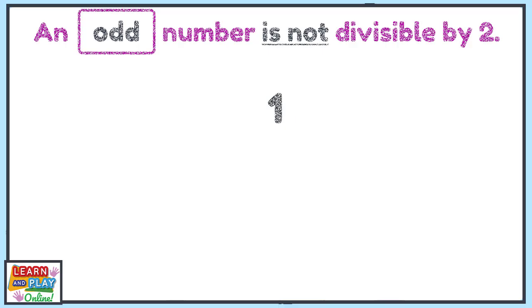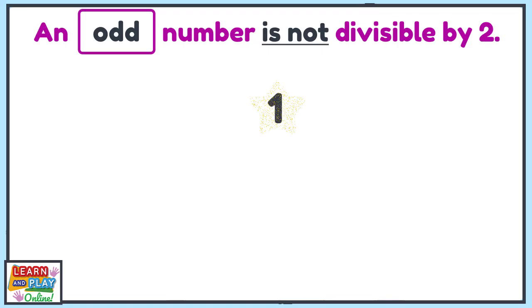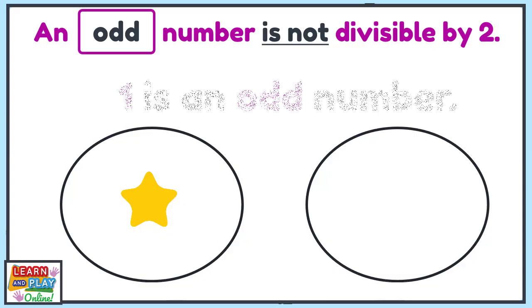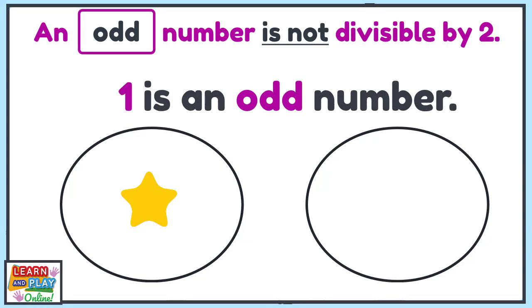Let's take the number 1 for example. If I had one star and tried to share it into two groups, what would happen? There would be one group with one star and the other group would have no stars, which means the groups are not equal. This means that the number 1 is an odd number.